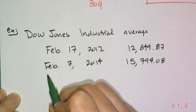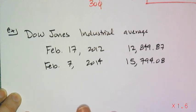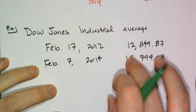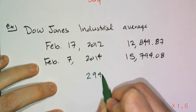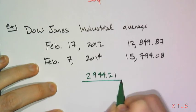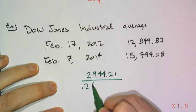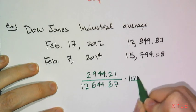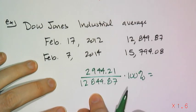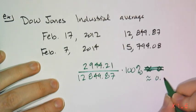On February 17, 2012, the Dow Jones Industrial Average was 12,849.87. On February 7, 2014, the average was 15,749.08. The difference between these two is 2,944.21. Divide by the original amount of 12,849.87, multiply by 100%, and with a calculator you get approximately 0.2291 times 100%.